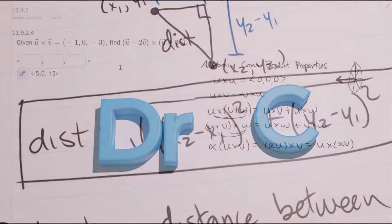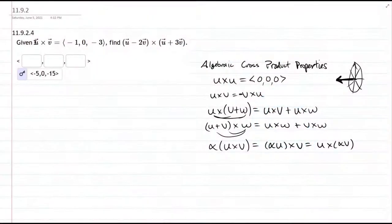This question is quite tricky. We're going to compute, well, we're given a cross product and then we're asked to compute a different cross product using this cross product. And we're going to need the algebraic cross product properties which comes not from the book but from the lecture videos.